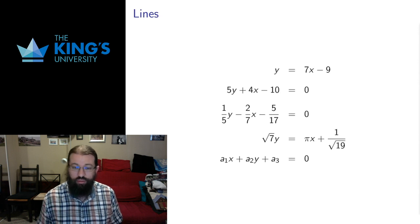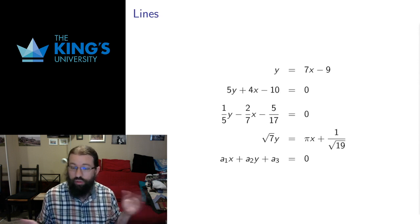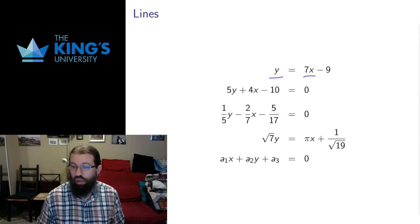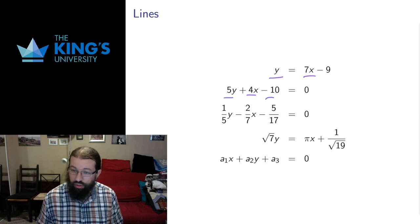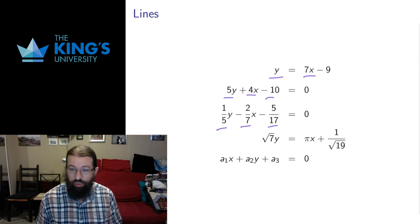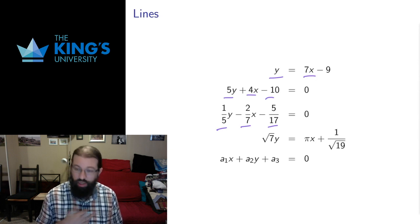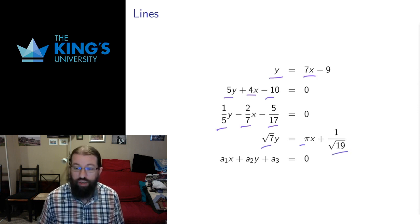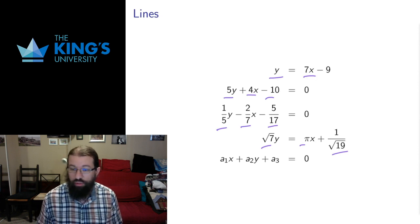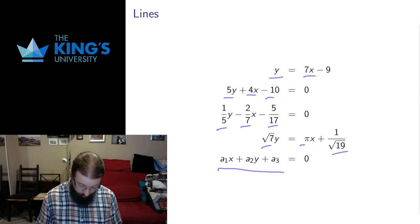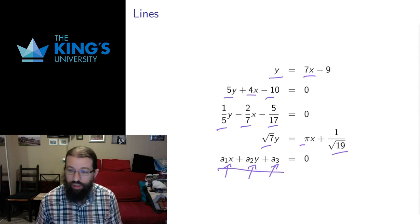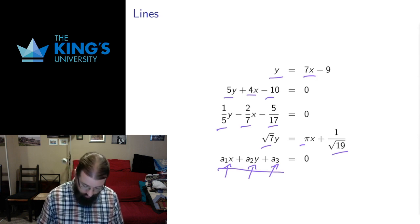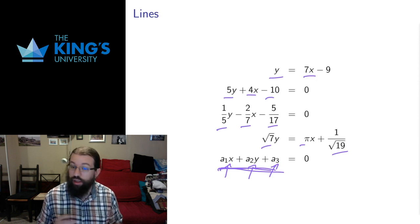Here are examples of equations that form lines — these are called linear equations because they lead to lines in the plane. For example: y = 7x minus a constant; 5y + 4x = a constant; 1/5 y minus 2/7 x minus a constant. The constants can be fractions or even irrational numbers, such as root(7)·y + π·x = 1/√19. The most general form is a1·x + a2·y + a3 = 0, where negative constants give subtraction. Any line will fit this general form.